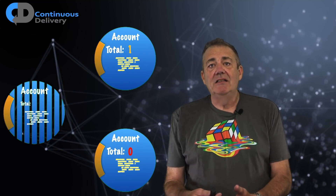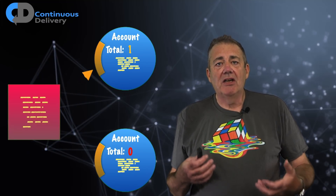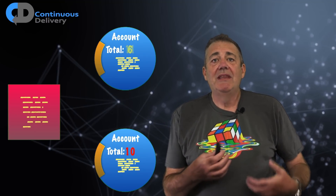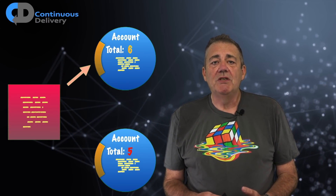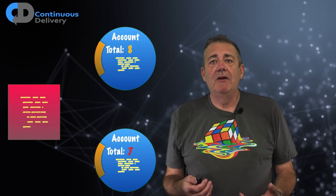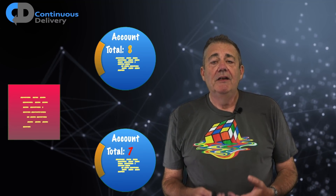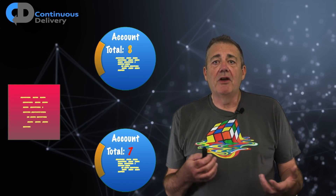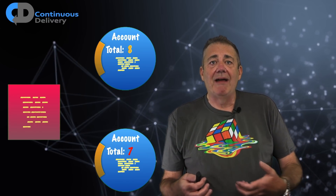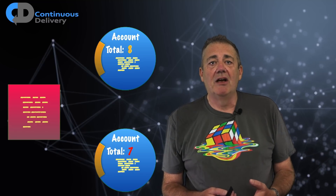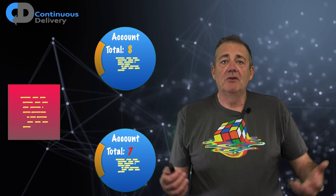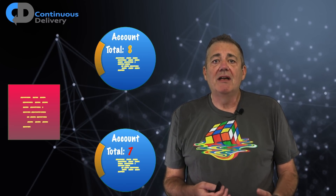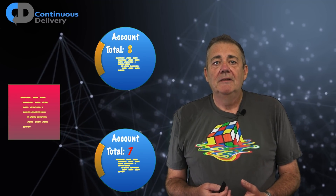This is handy because I can now write code that deals with both your account and my account without knowing anything about the differences between them. That ought to allow us to move quite quickly, raising the level of abstraction in our code, so that I can write code that doesn't care about how accounts actually work inside — where the data is stored, or even whether your account is the same as mine on the inside.